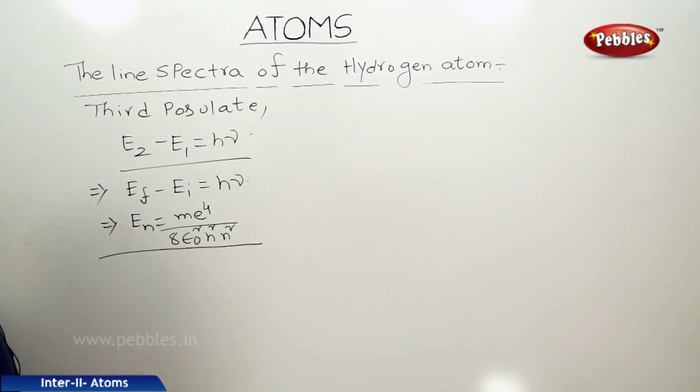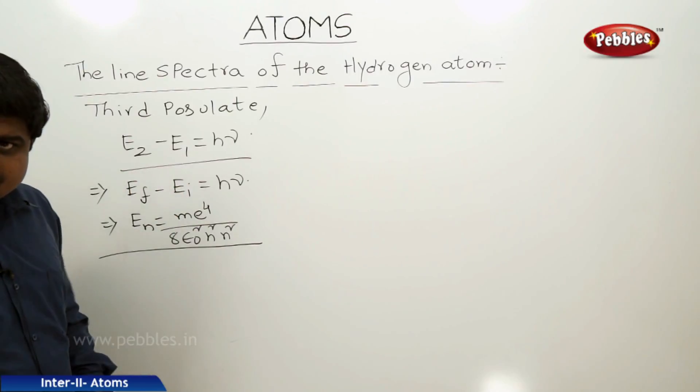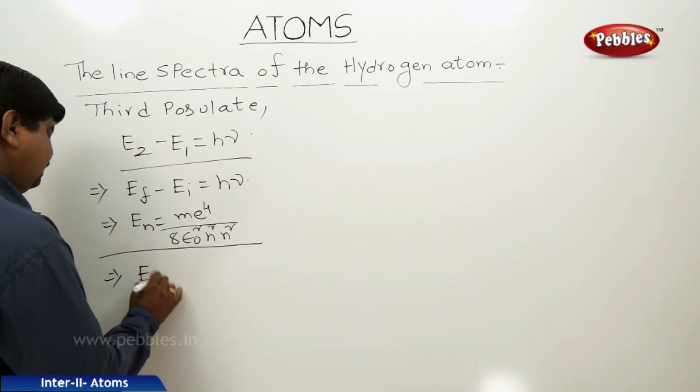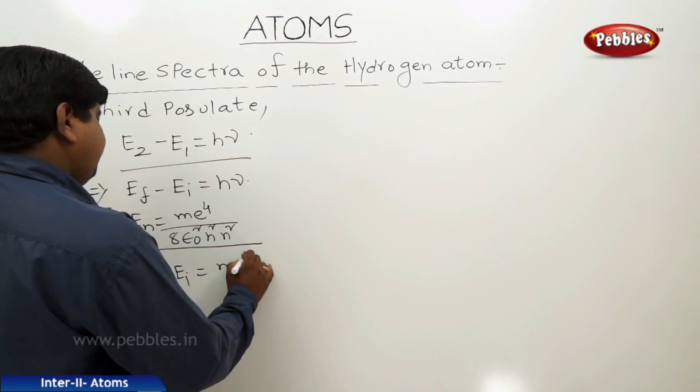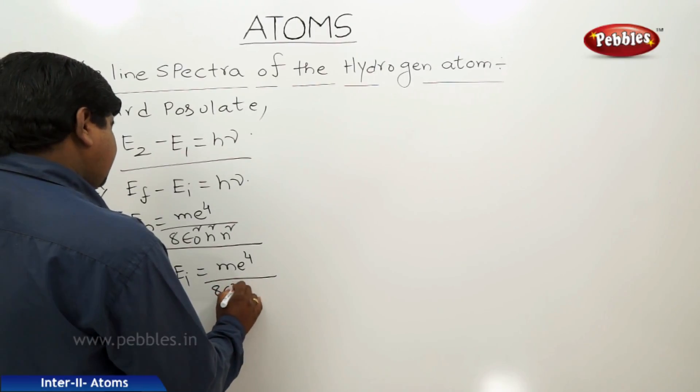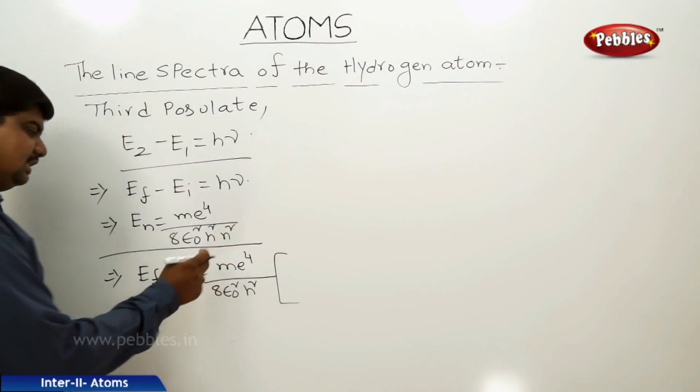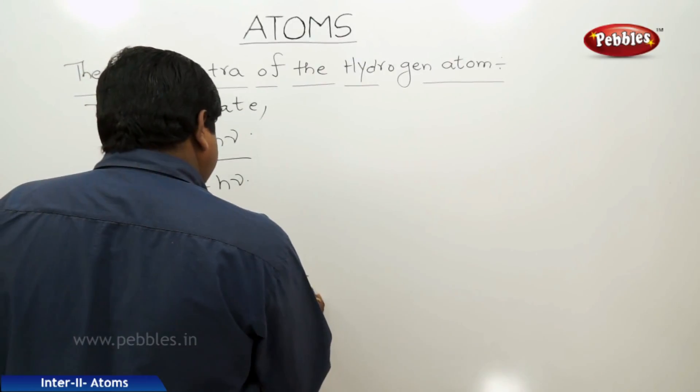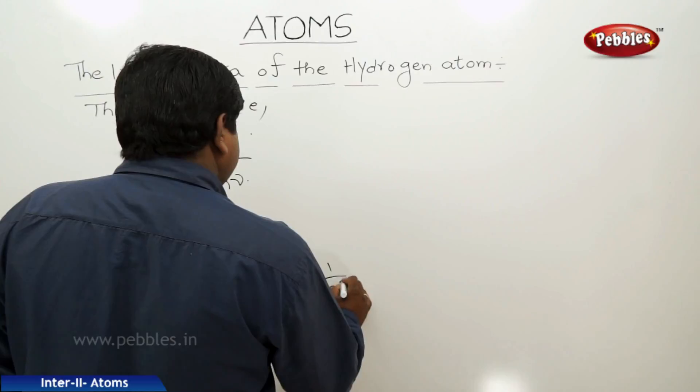So now this energy difference is equal to this formula. We can write that Ef minus Ei equals m e⁴ by 8 epsilon naught squared into h squared. This is inversely proportional to n squared, so we can write this as 1 by nf squared minus 1 by ni squared.